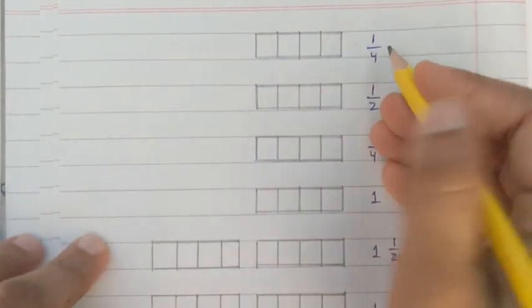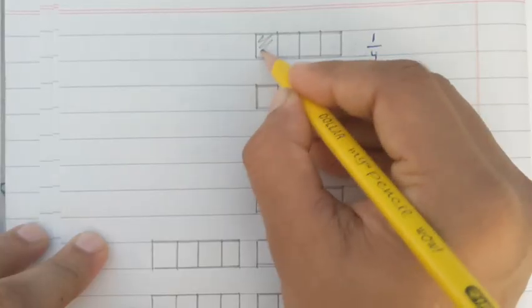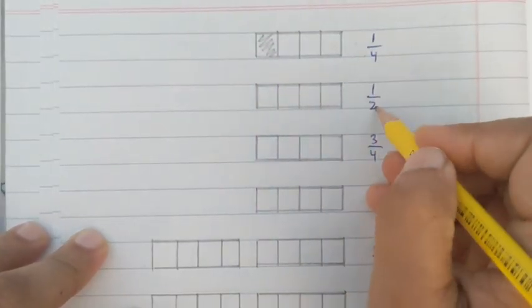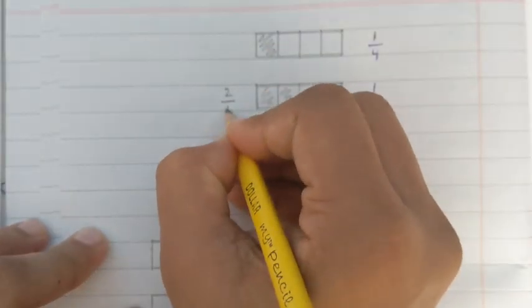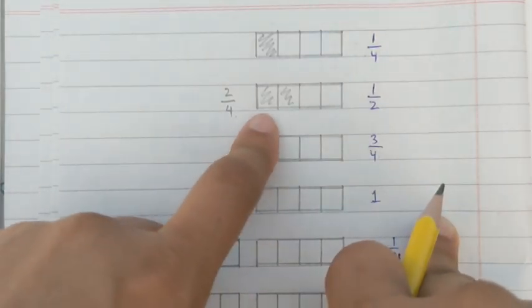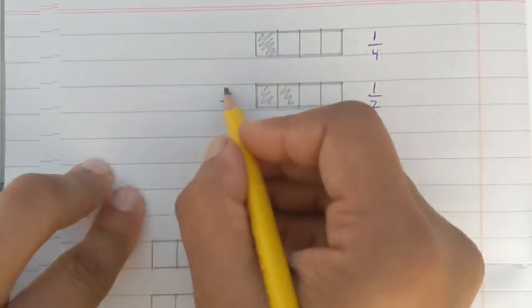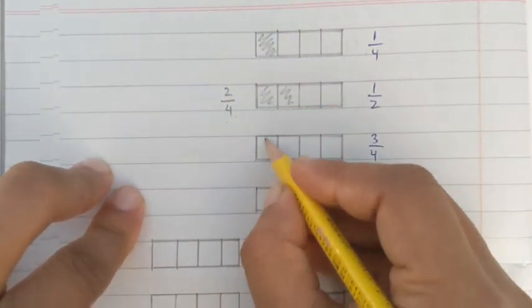The first term is 1/4, which means one quarter — a shape having 4 equal parts with 1 shaded. Then comes 1/2, meaning half of the shape is shaded, which is 2/4. Since the denominator remains the same, it is 2 quarters. When simplified, 2/4 becomes 1/2.